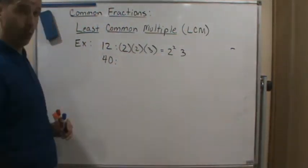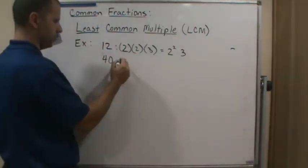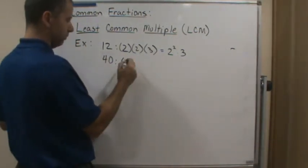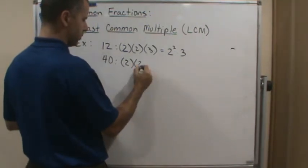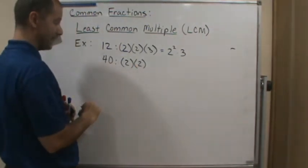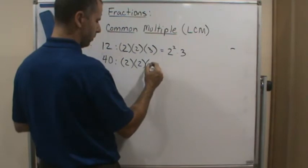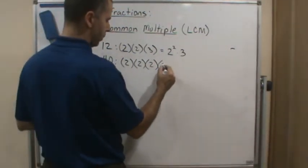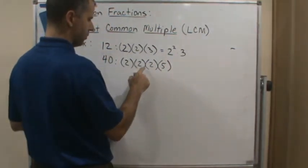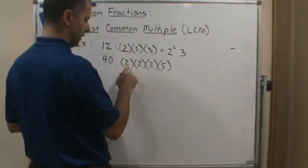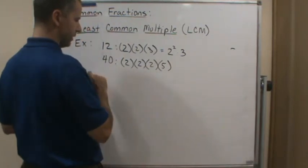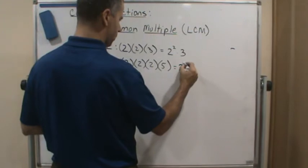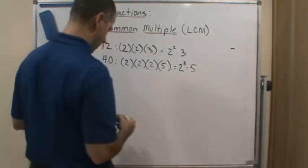Now I'm going to do the same thing with 40. So I'm going to start with 2, so 2 times 20. But then 20 is divisible by 2, so that'll give me 2 times 10. 10 is also divisible by 2, so that'll give me 2 times 5, and 5 is prime, so I'm done. 2 times 2 times 2 times 5 is 40, because this is 8, and 5 times 8 is 40. So now I'm going to write this in exponential form: 2 cubed times 5.